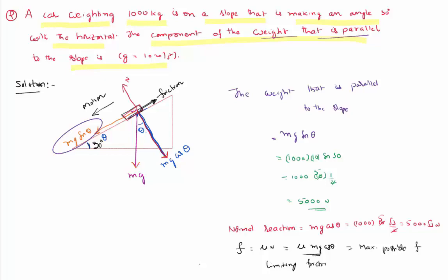If mg sin theta is less than the maximum frictional force, the frictional force will self-adjust and become equal to the applied force mg sin theta, and the body remains in a state of rest. We will be discussing this in detail in the friction chapter. Thank you for watching and we will continue this discussion in further video lessons.